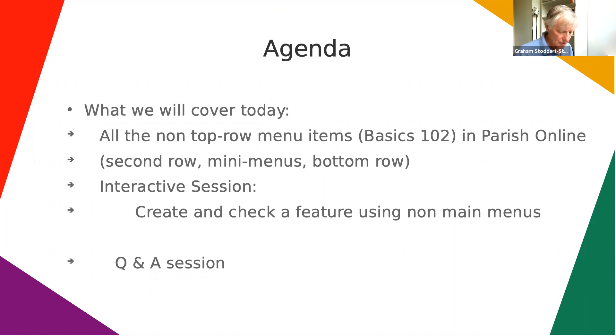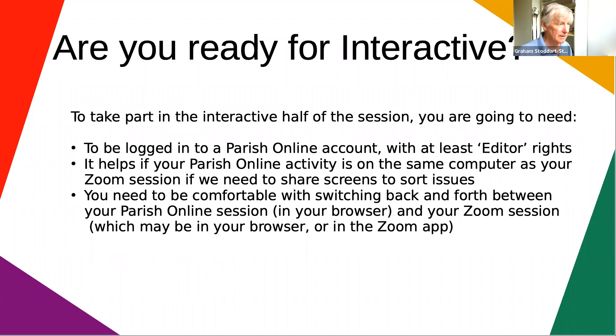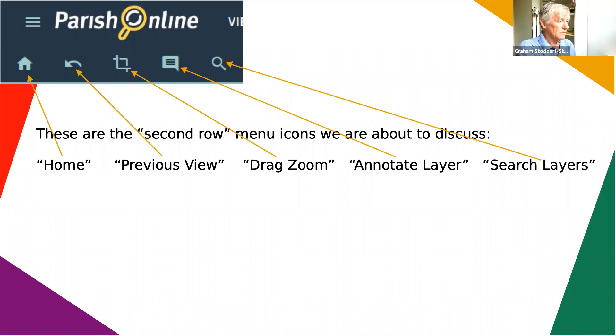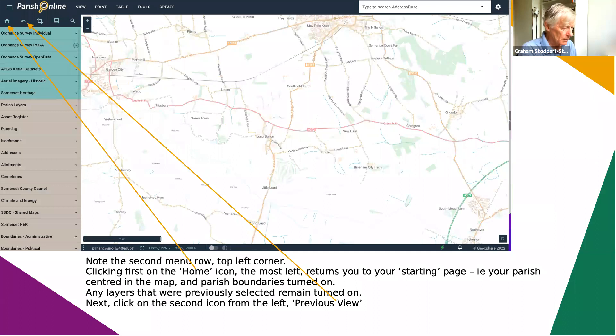You're all friendly with interactive, so we can skip that one. When I talk about second row menus, I'm looking at this slot which is in the top left corner of your Parish Online site, and we're just going to run through those all quickly. Remember everything about all the first row menus - so second row, top left corner.